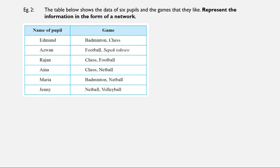Now we look at the next example. The table below shows the data of six pupils and the games that they like. Represent the information in the form of a network. You can see the names of the pupils — six pupils — along with the name of each game. I simplify all the games by finding the number of tally. For example, chess has three entries, badminton has two, and so on.